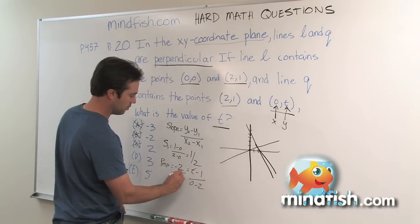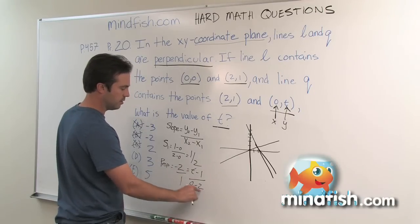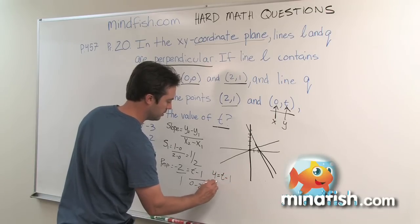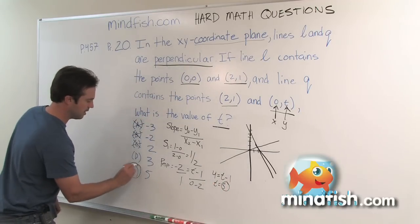So if I cross multiply negative two times negative two is four. Four is going to be t minus one and so t is going to equal five. And that's consistent with my estimate.